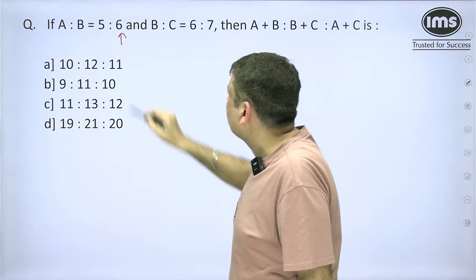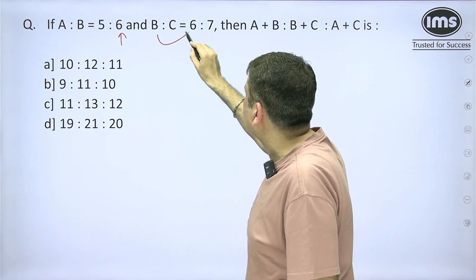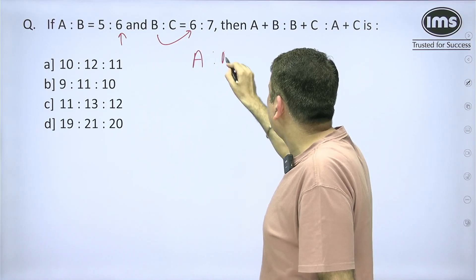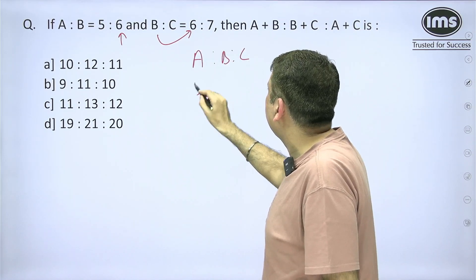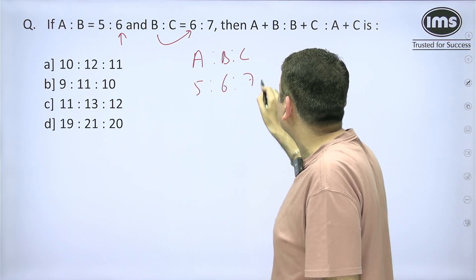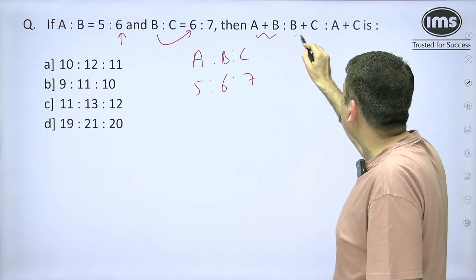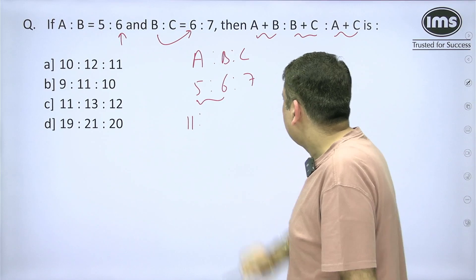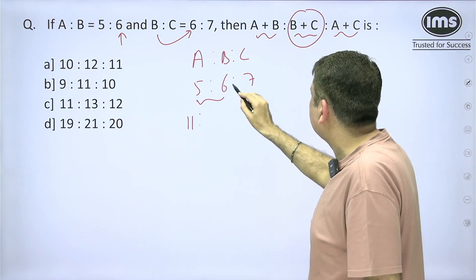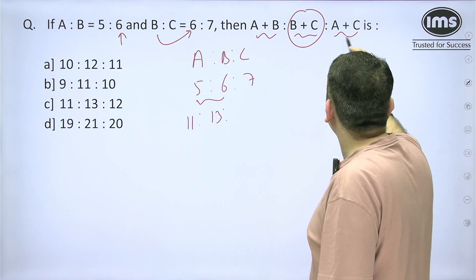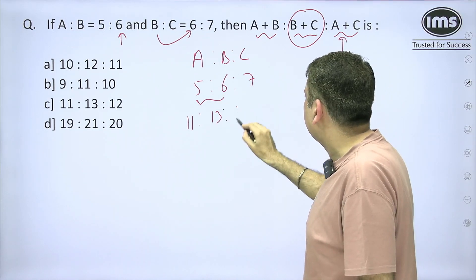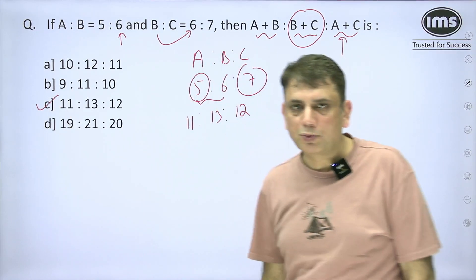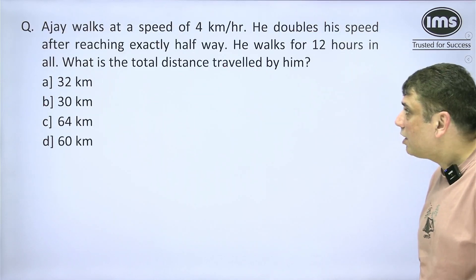As you can see, B is common — B is 6 in both ratios — so A : B : C is simply 5 : 6 : 7. We need to find A+B : B+C : A+C. So A+B = 5+6 = 11, B+C = 6+7 = 13, and A+C = 5+7 = 12. The answer is 11 : 13 : 12, which is option C. Easy one.